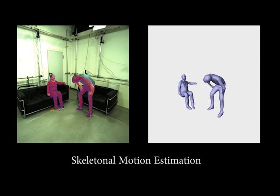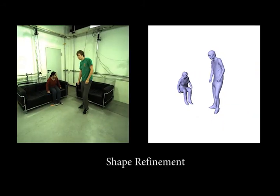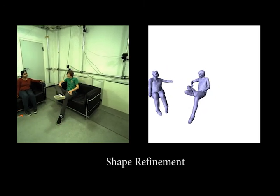In the next step, the skeletal motion of the templates is estimated using shading, depth and silhouette information. Finally, the geometry is refined based on a full BRDF model, generating detailed spatiotemporally coherent mesh sequences.